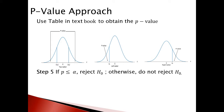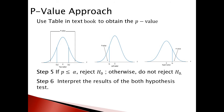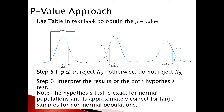Step six: we need to interpret the results from both hypothesis test approaches — the critical value approach and the p-value approach. It is noted that the hypothesis test is exact for a normal population but is approximately correct for large samples whenever populations are non-normal.